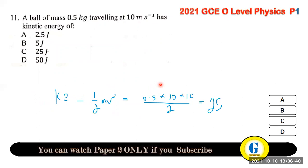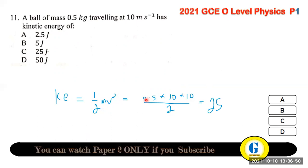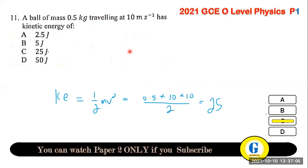Question 11: a ball of mass 0.5 kg travelling at 10 m/s — what is the kinetic energy? KE = ½mv² = 0.5 × 0.5 × 10² ÷ 2... working this out gives 25 joules. The kinetic energy of the ball is 25 J.